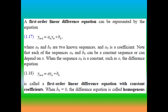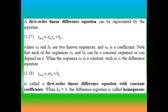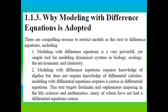So yn+1 = an·yn + bn is said to be a non-homogeneous first order linear difference equation. When bn = 0, the equation becomes yn+1 = an·yn, which is a first order linear homogeneous difference equation. This is the distinction between a linear homogeneous difference equation and a non-homogeneous linear difference equation.